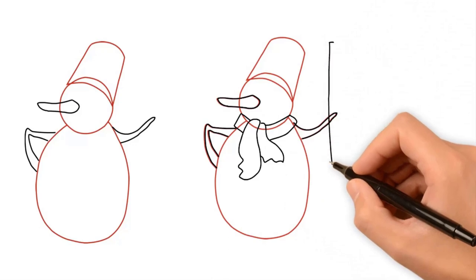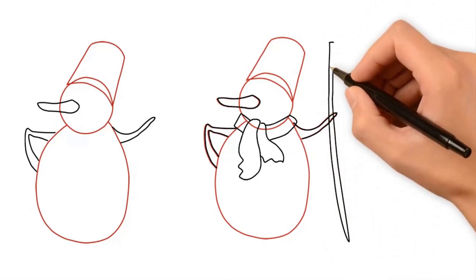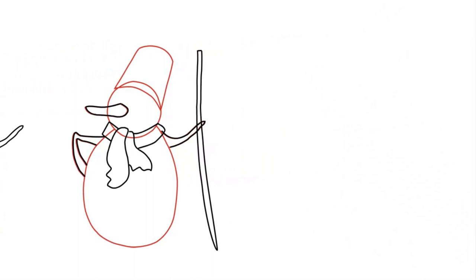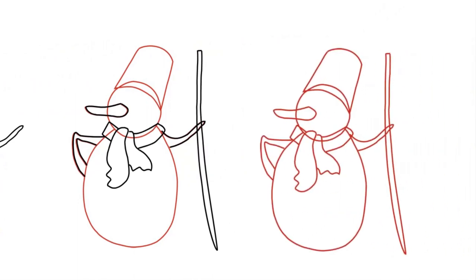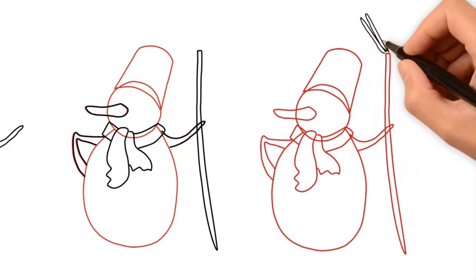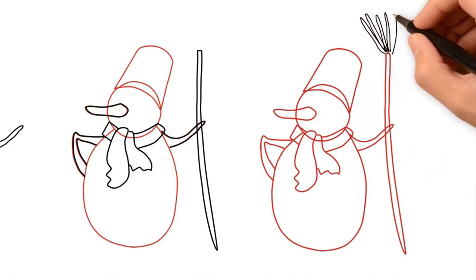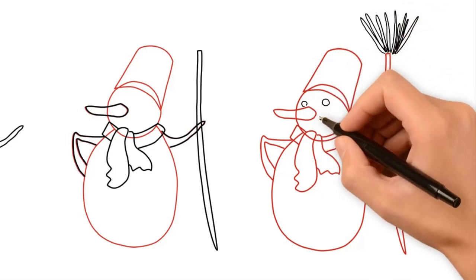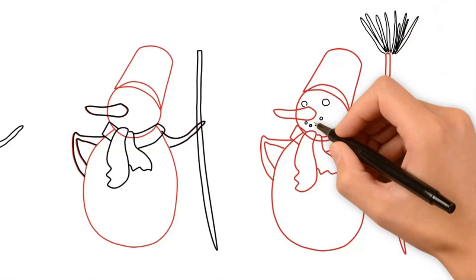Now draw a stick in the snowman's hand. It will be a broom. Now let's draw the eyes, mouth, and buttons. Let's paint the snowman and his clothes.